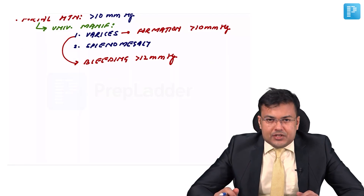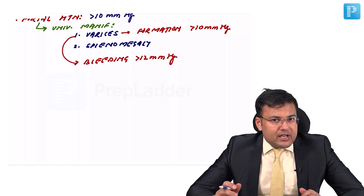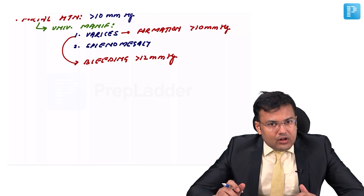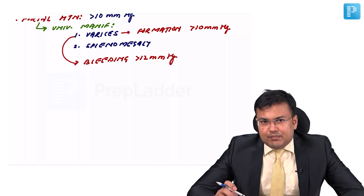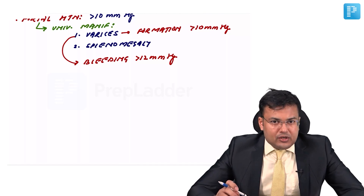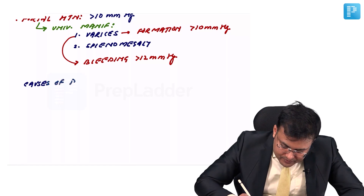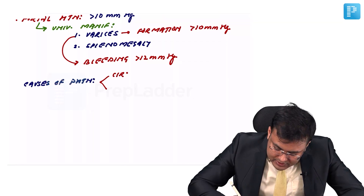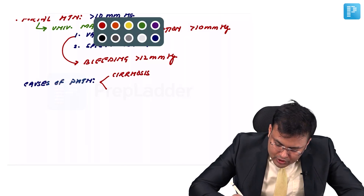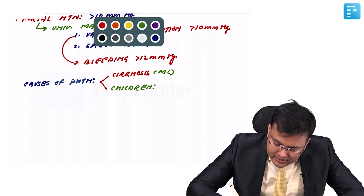What is the most common cause of portal hypertension worldwide? That is cirrhosis. In children, because the most common cause of cirrhosis is generally alcohol and children are not allowed to buy alcohol, the most common cause in children is EHPVO — extrahepatic portal venous obstruction. This question was asked in AIIMS.